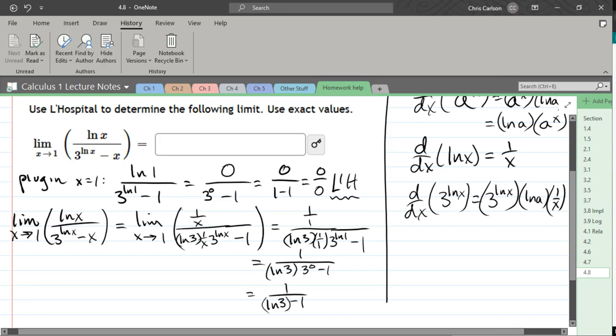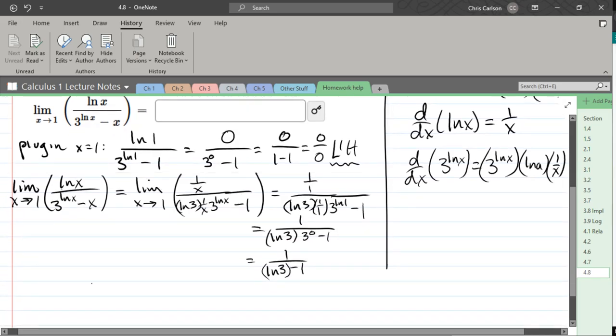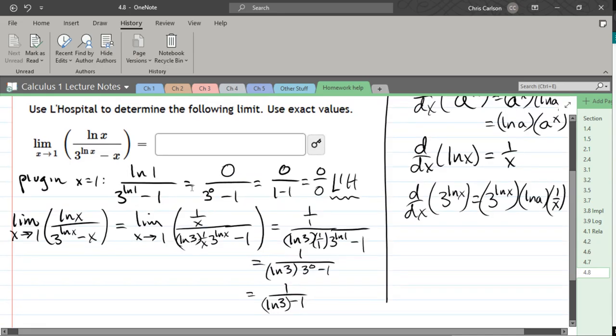If you're on a calculator and you want to type this in, make sure that you do ln of 3 and then subtract 1. What you don't want to do is ln of 3 minus 1. That's not going to be the same number. So make sure you group up your ln if you're going to compute it. But you should be able to just type this right in, in that form.